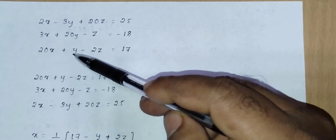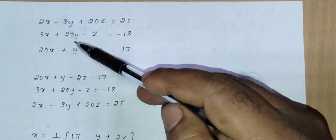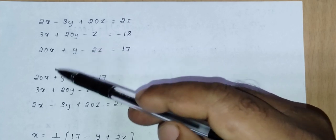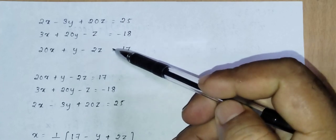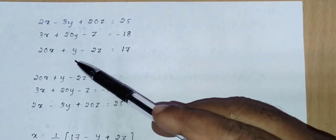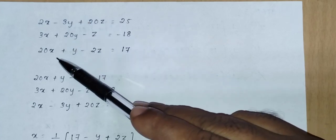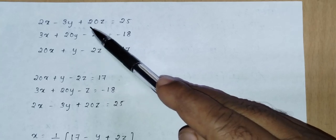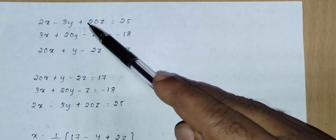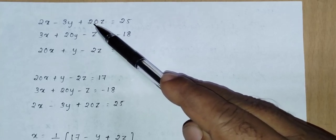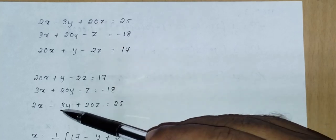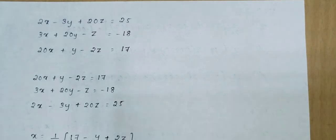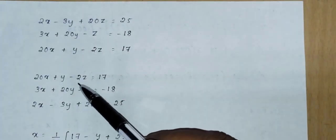So we take the first equation as 20x + y - 2z = 17. For y, we look for the maximum y coefficient: here y is -3, here y is 20, here y is 1 — so the second equation has the maximum y coefficient: 3x + 20y - z = -18. For z, the remaining equation is 2x - 3y + 20z = 25, which has the maximum z coefficient.